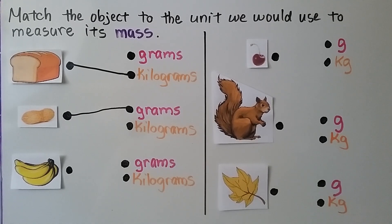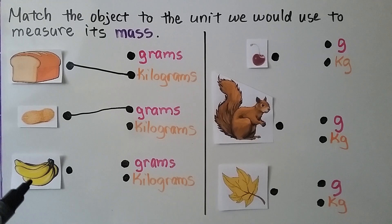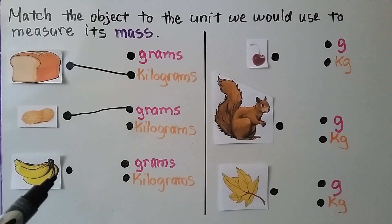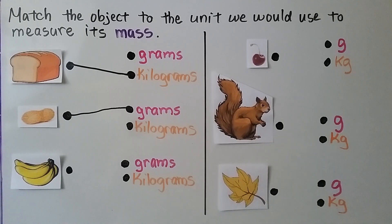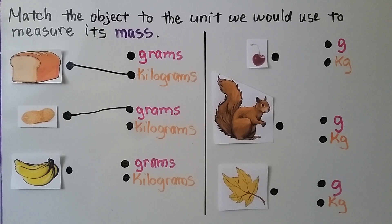One little peanut in a shell doesn't have much mass. What about a bunch of bananas? Here we have several bananas — at least four, maybe five. So we have a bunch of bananas. Would we measure its mass in grams or kilograms? If you said kilograms, you're right.